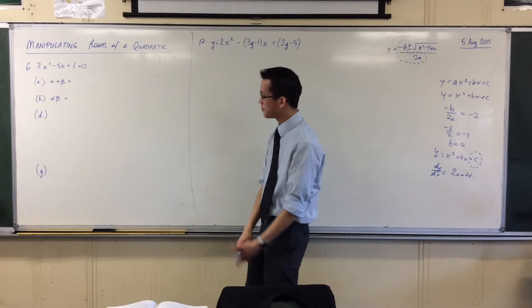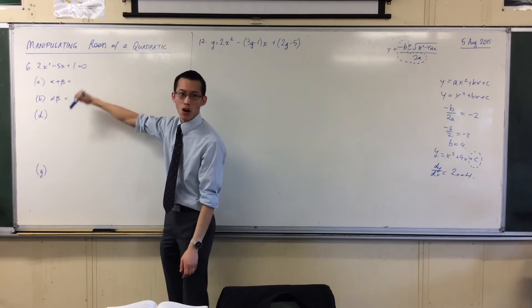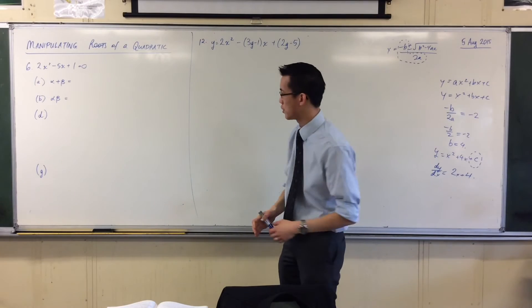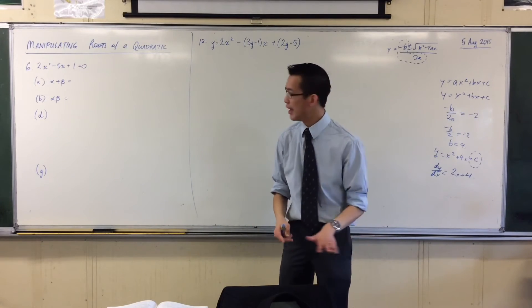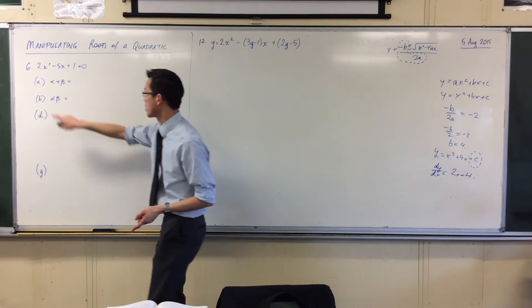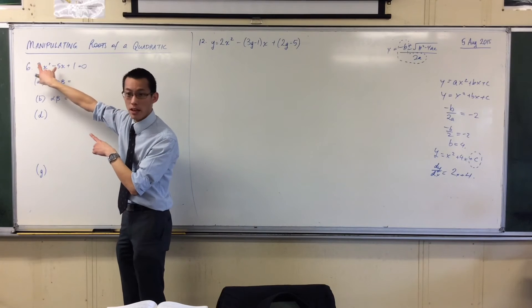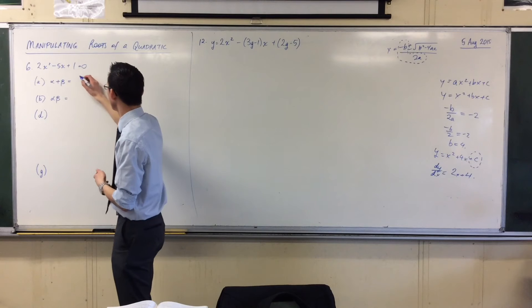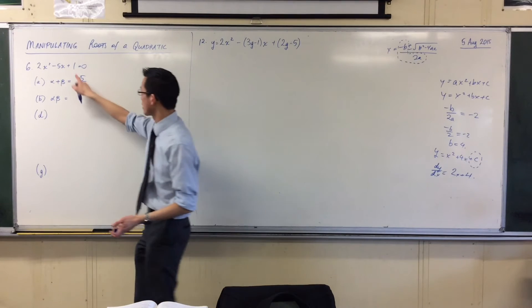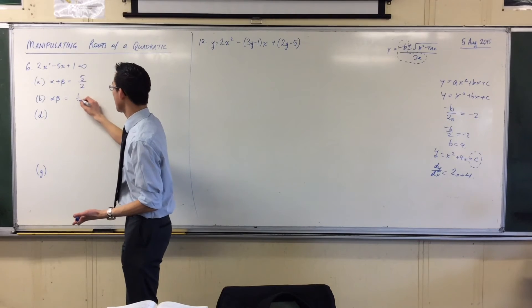Let's look at this question. They give you a quadratic, and the first thing you should always do is work out the sum and product of roots just from the coefficients — you don't need to solve it. So alpha plus beta equals minus B over A, and with the double negative we get five over two. The product is C over A, which is just one half.